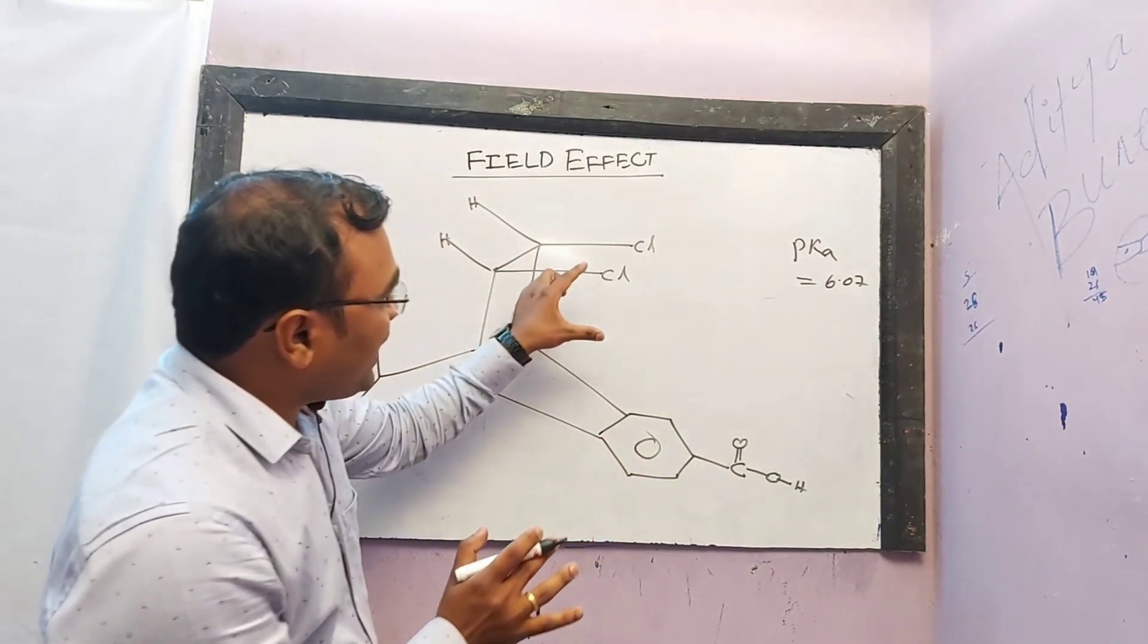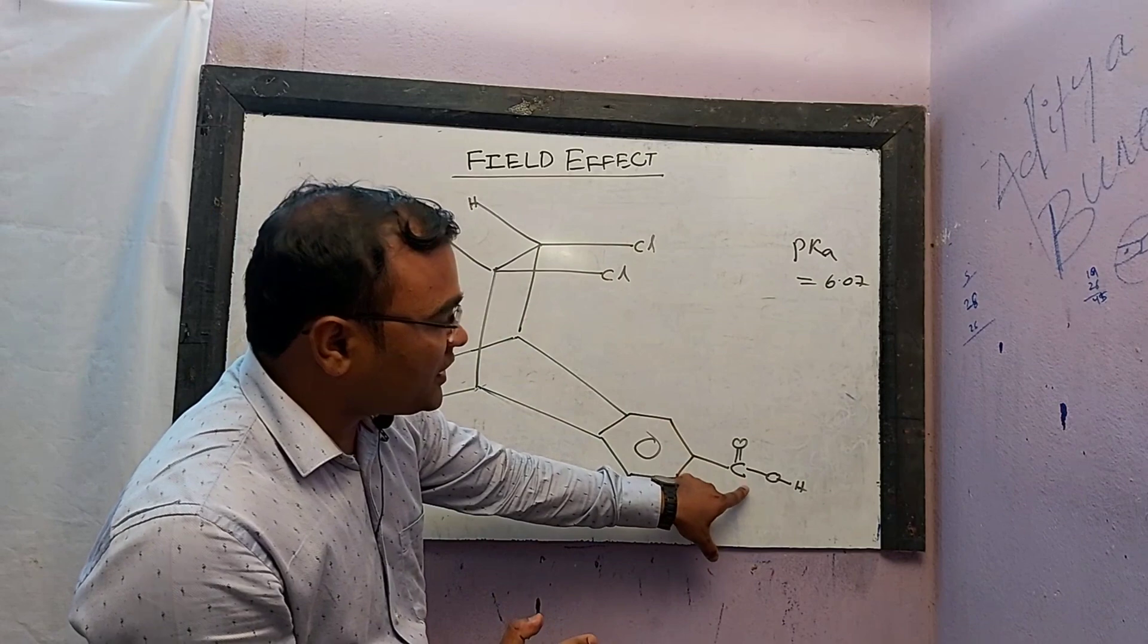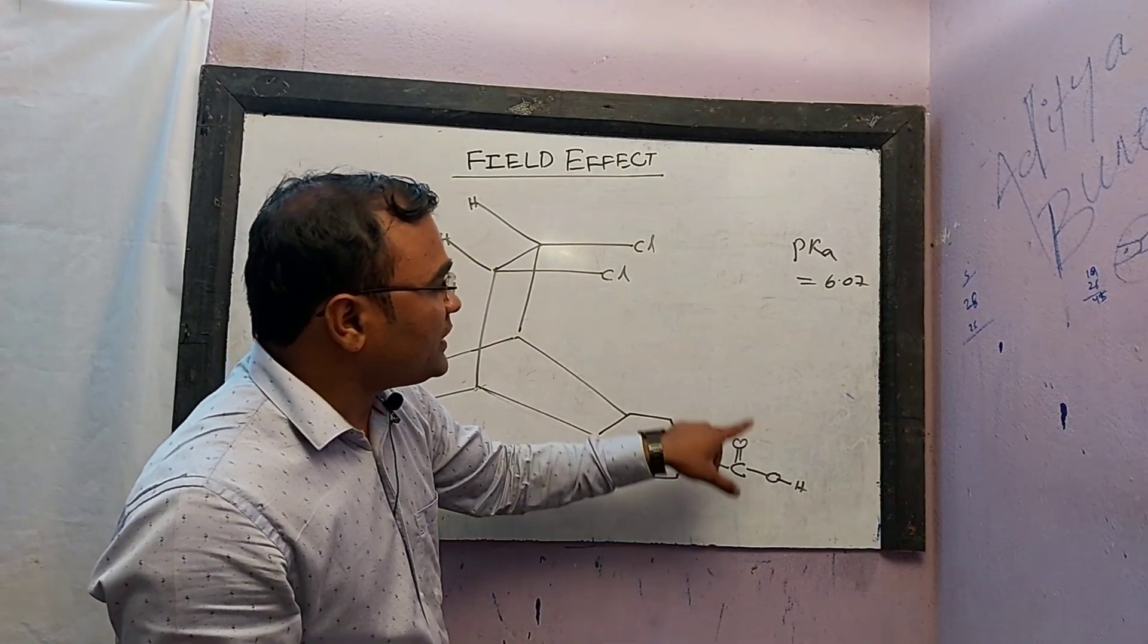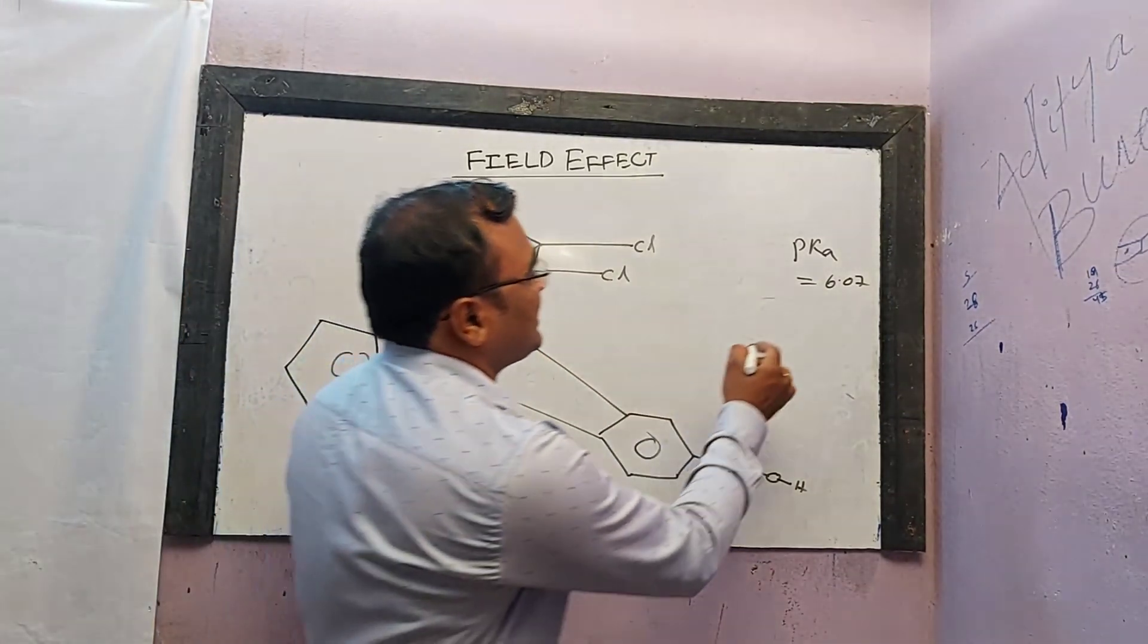So what is happening here? Chlorine is in the carboxylic acid, so it needs more acidity, but it is less acidic.